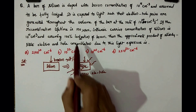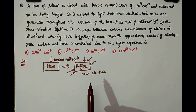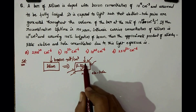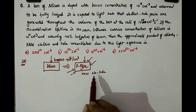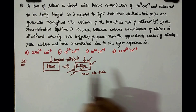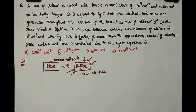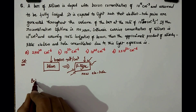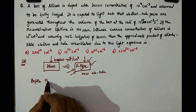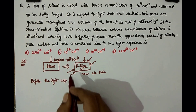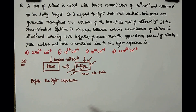When doped with boron it is totally ionized. We need to find the approximate product of steady-state electron and hole concentration due to the light exposure. After exposure, in addition to the previous electrons and holes, there exist new electron-hole pairs. Let us first see the case before the light exposure.